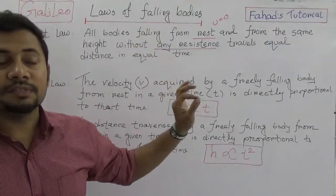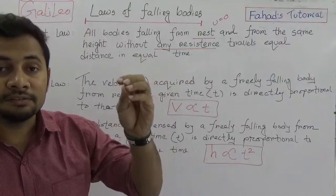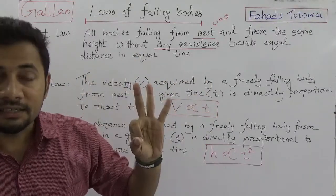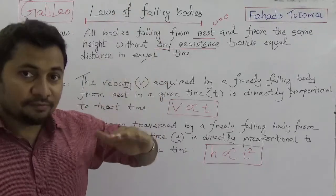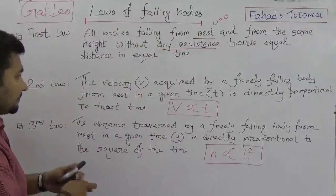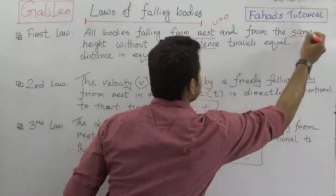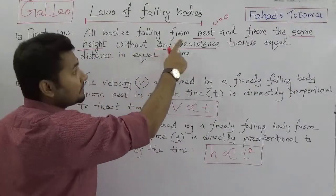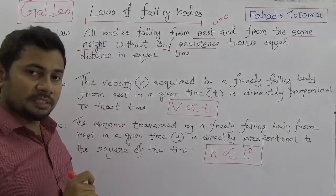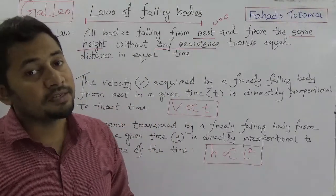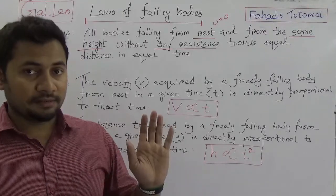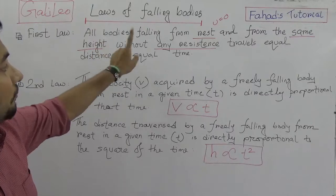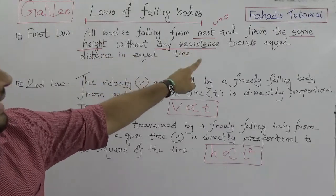There are three conditions for Galileo's rules of falling bodies: all objects must be falling from the same height, without any resistance, and the initial velocity must be zero — so they are falling from rest. If these three conditions are met, then the first law states that all bodies falling from rest and from the same height without any resistance travel equal distances in equal time.